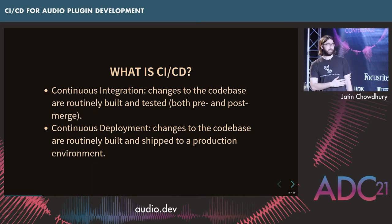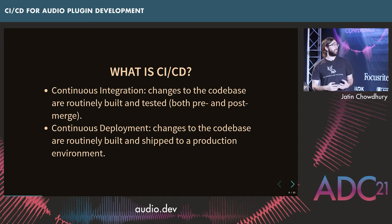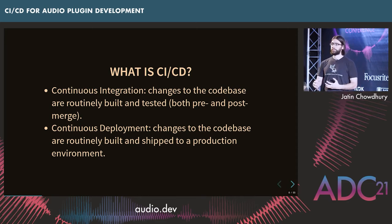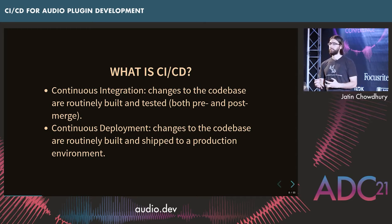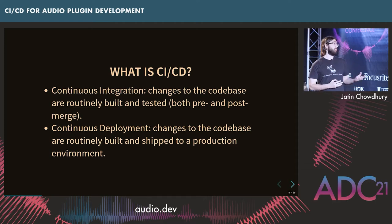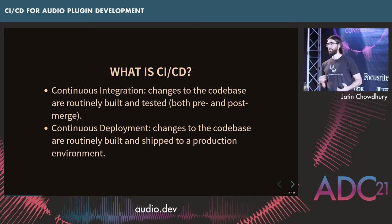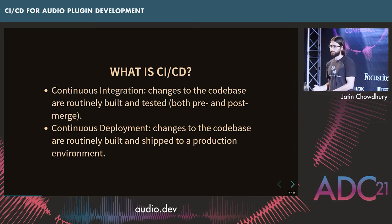Just to define these ideas briefly: for continuous integration, if you're making changes to your codebase — say you have a Git repository and you're trying to merge commits — either before or after merging, you want to make sure the changes you're making are not breaking anything. They're not making your code fail to compile, they're not causing tests to fail, anything like that.